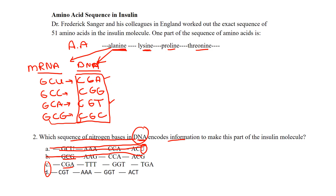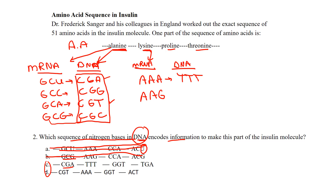Let's move to the second amino acid — lysine. We'll do the same thing: look at messenger RNA and find all codons that code for lysine. This time there are only two: AAA and AAG. Converting those to DNA complements: AAA matches with TTT, and AAG matches with TTC — since G always matches with C.